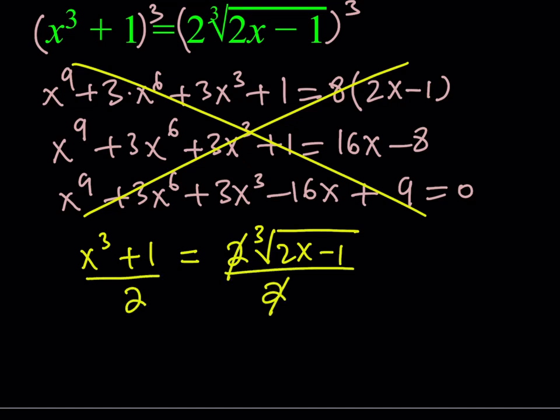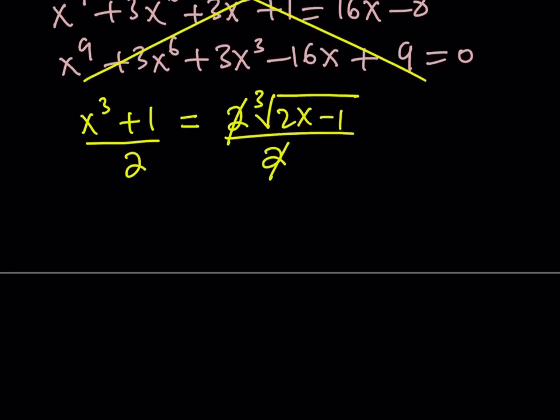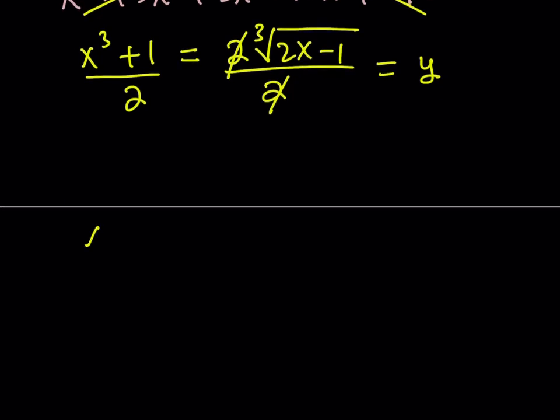Once I do that, here's what I'd like to do. I got something like it didn't really change it a whole lot. But what I'd like to do here is set this equal to y. When I set this equal to y, I'm actually getting two equations from here. One of them is basically saying that x cubed plus one over two is equal to y.